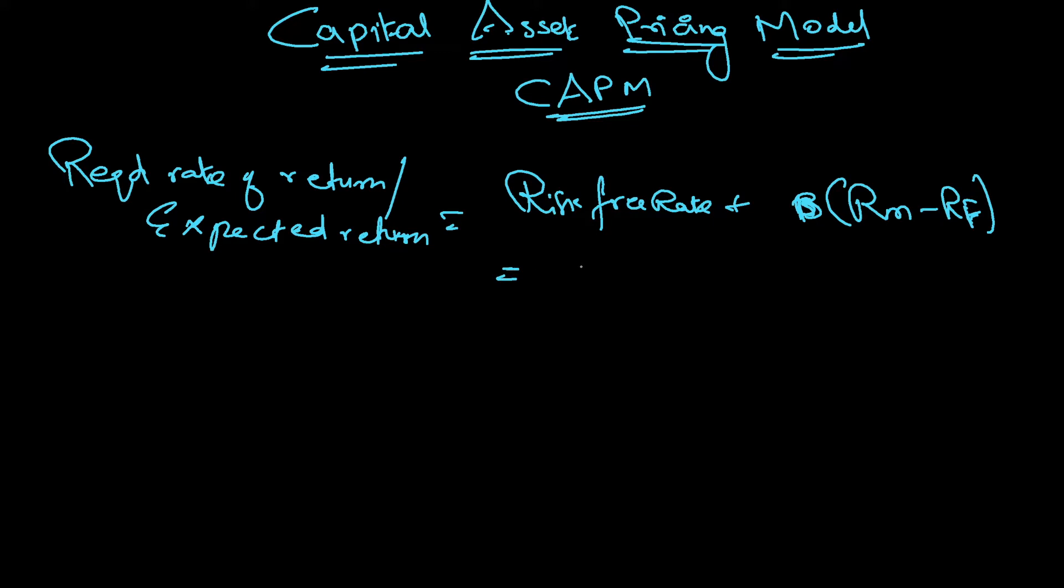If the risk-free rate is, for example, 4 percentage, plus beta of the stock is, let's say, 2, and return from the market is, let's say, 15 percentage minus risk-free is 4 percentage. So 4 percentage plus, so 15 minus 4 is 11, 11 into 2 is 22. So 22 percentage it will come to, so total it comes to 26 percentage.